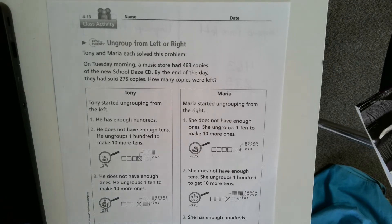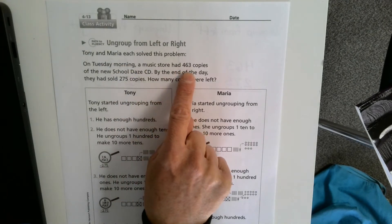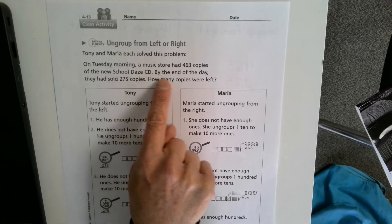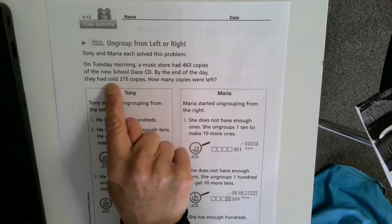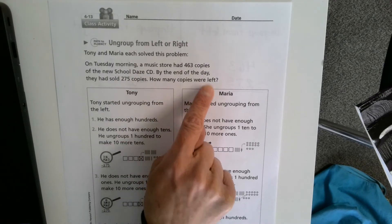We have a new method, which is ungrouping from the left. The problem I want to share with you is on page 243 in your math workbook. It says on Tuesday morning, a music store had 463 copies of the New School Days CD. By the end of the day, they had sold 275 copies.